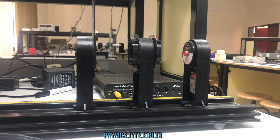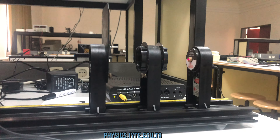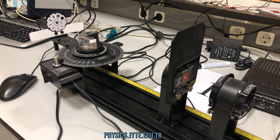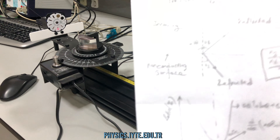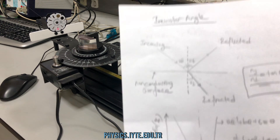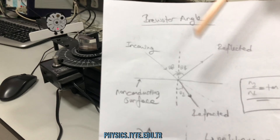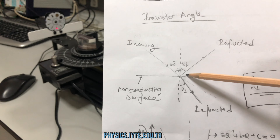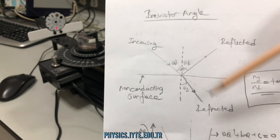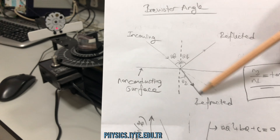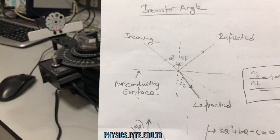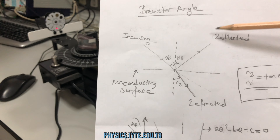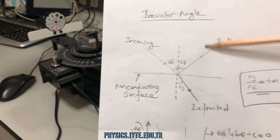Hello everyone, today we do Experiment 1, which is the Brewster angle. According to Brewster's law, the incoming light is partially polarized when reflected off a non-conductive surface. And we do this experiment today.